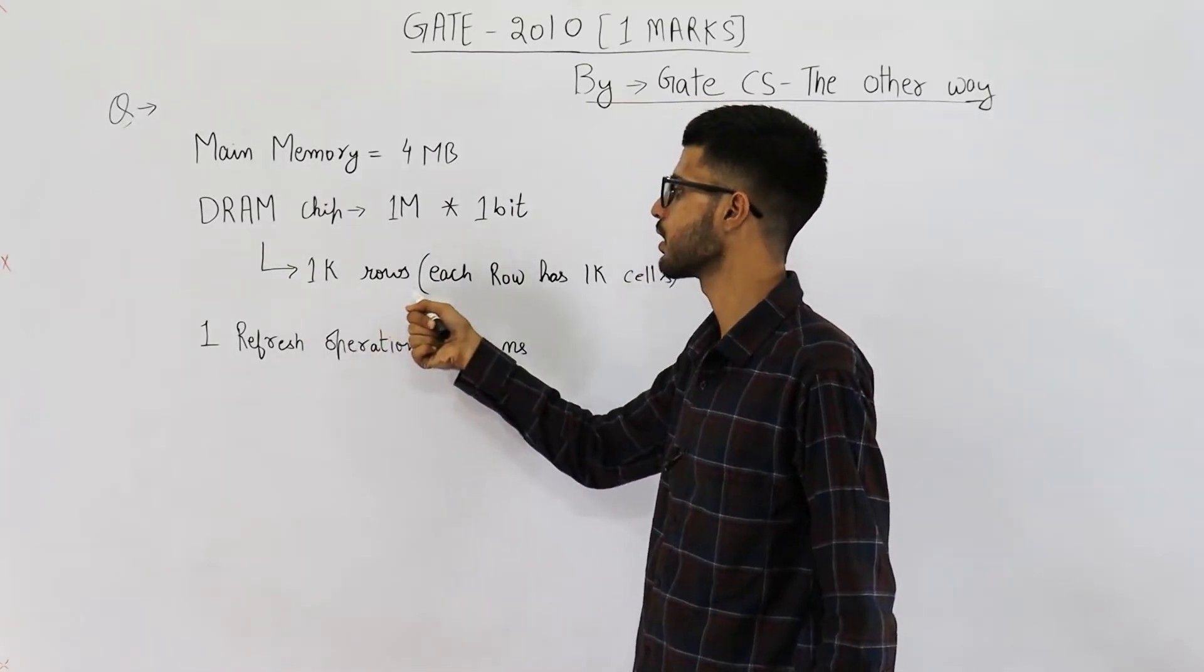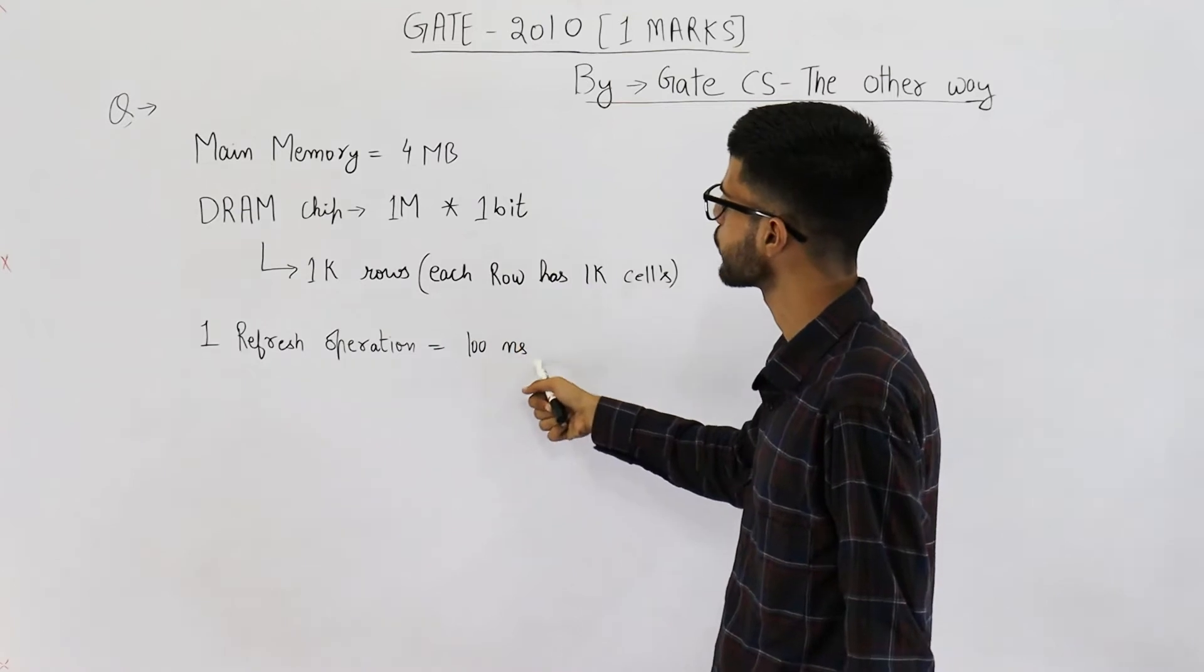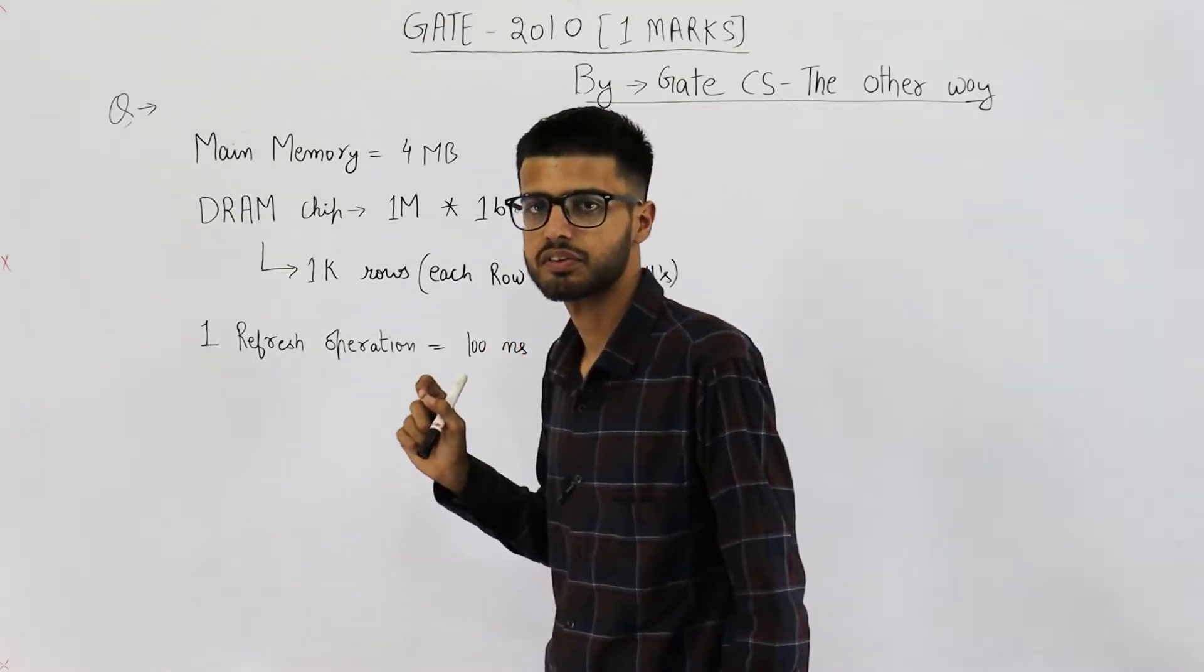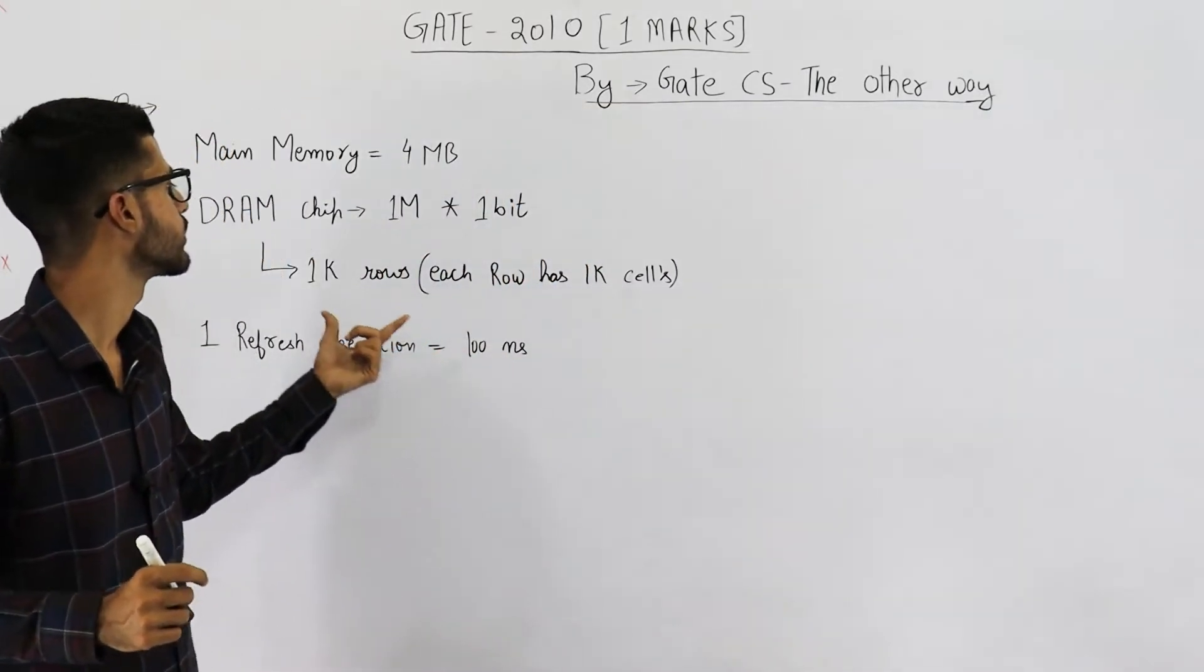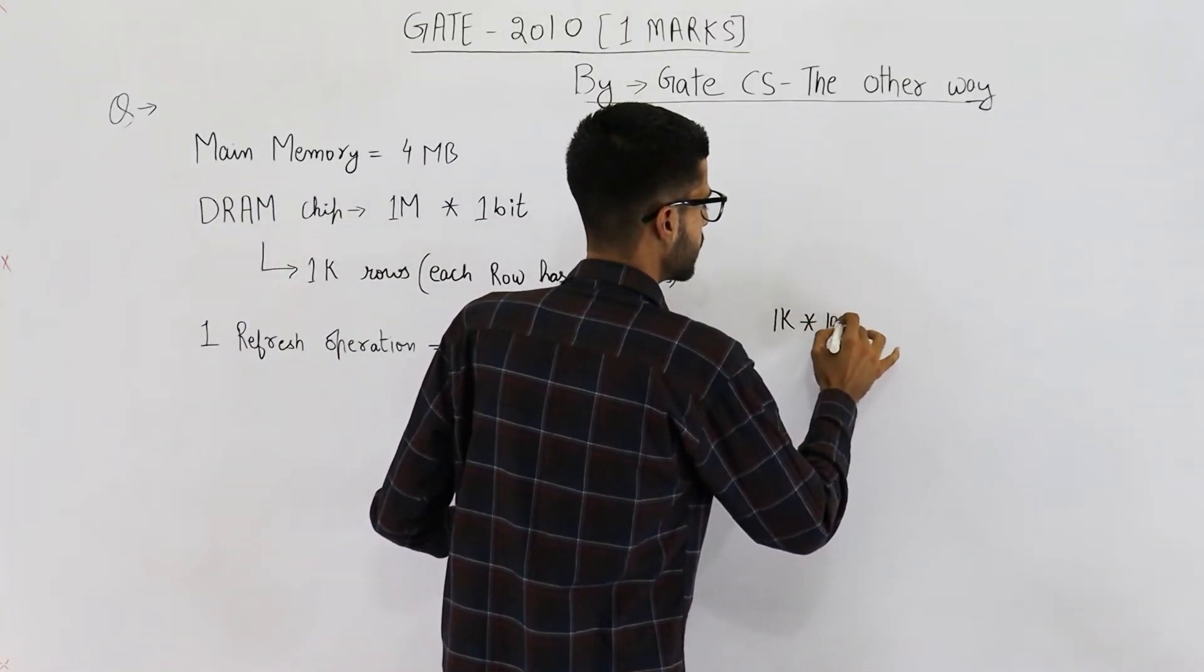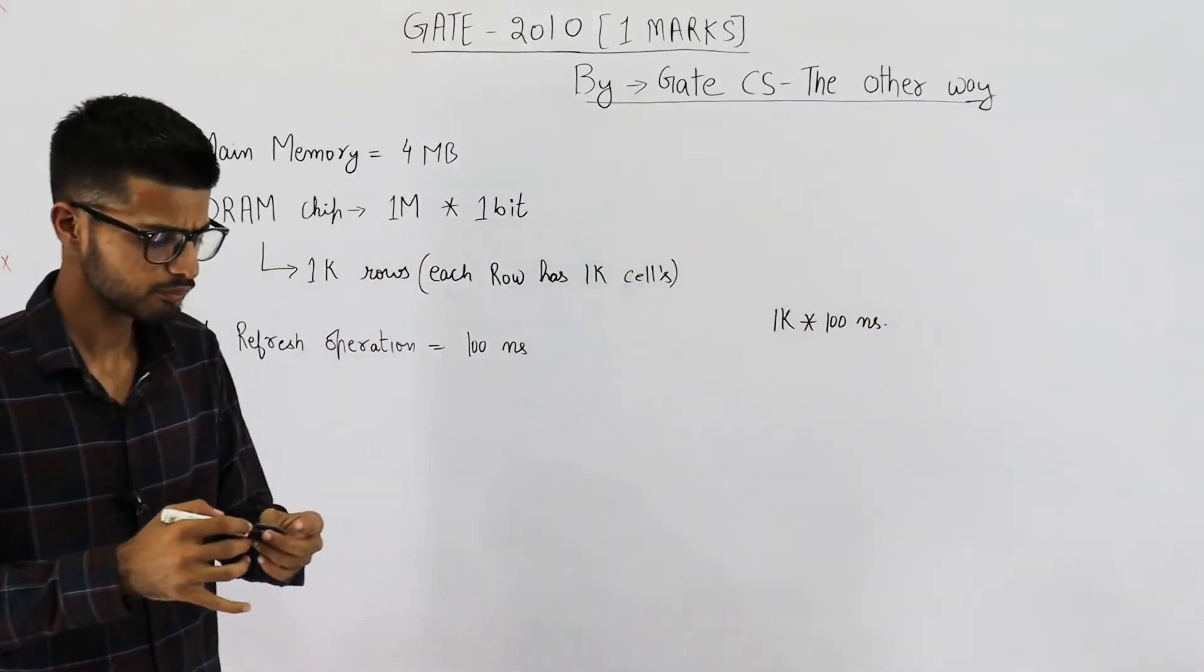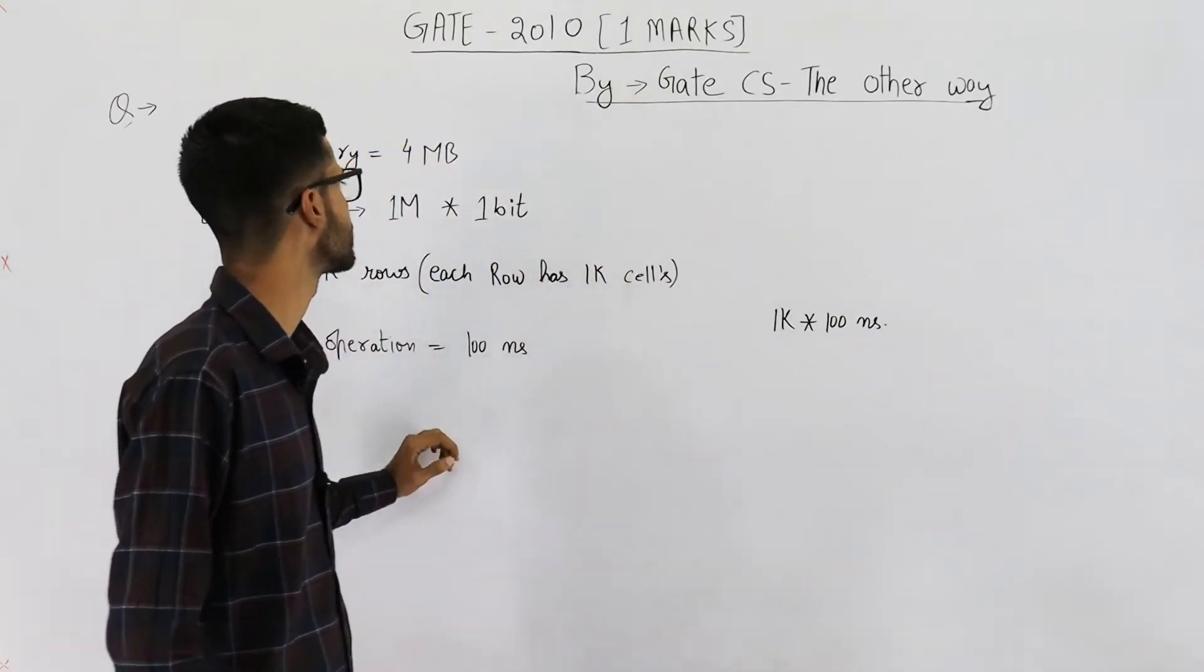Now, there are 1K rows in each DRAM chip. Also, one refresh operation takes 100 nanoseconds. That means, if we refresh DRAM chips row by row, then we need to spend 100 nanoseconds 1K times. So, the answer to this question will be 1K multiplied by 100 nanoseconds. Maybe it's B part. But we are not very concerned about its answer. We need to understand this concept.